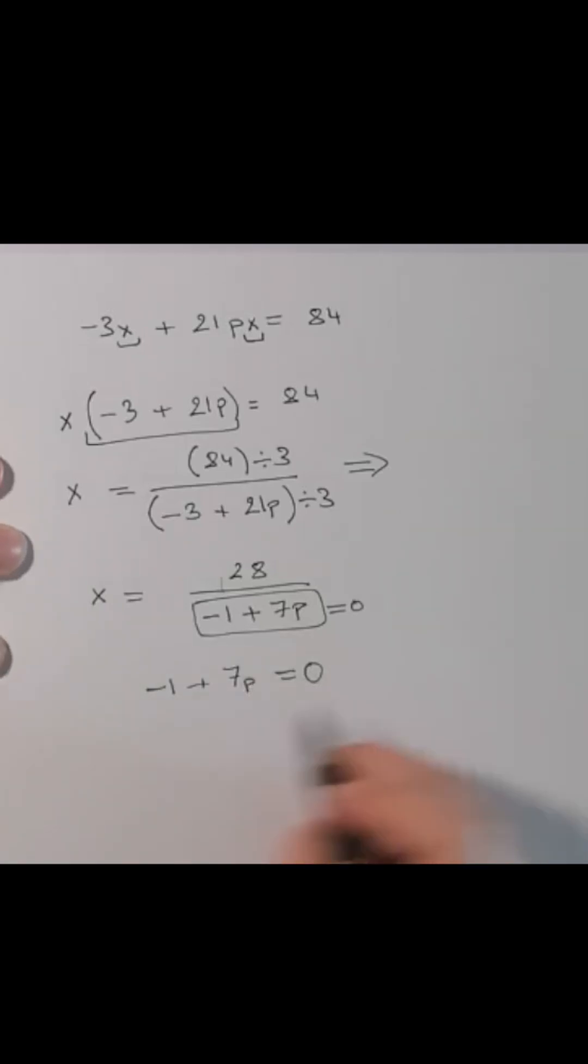So what is p in this case? 7p will be equal to 1, so p will be equal to 1 over 7.